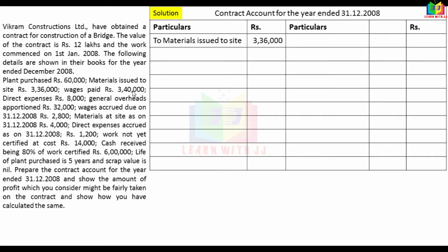Wages paid Rs. 3,40,000. Now, wages accrued — we can add that. You can add in the inner column and add in the outer column. Wages accrued is Rs. 2,800, so we add that to get the total.